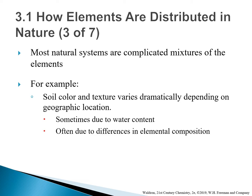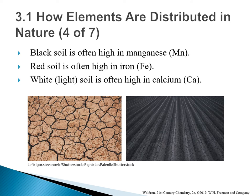Most natural systems are complicated mixtures of elements. For example, soil color and texture varies dramatically depending on geographic location, sometimes due to water content, often due to difference in elemental composition. Black color soil is often high in manganese. Red color soil is often high in iron. White or light soil is often high in calcium.